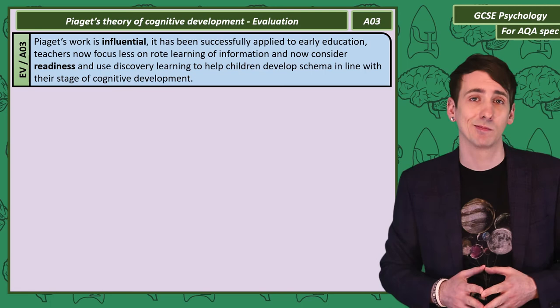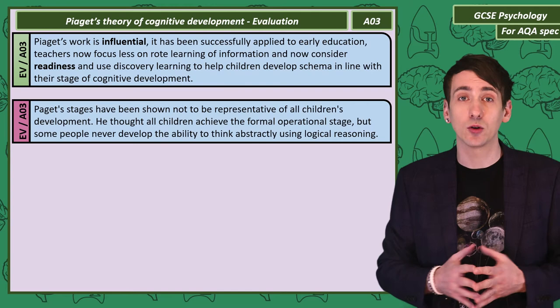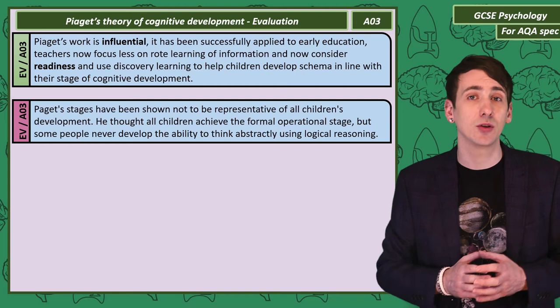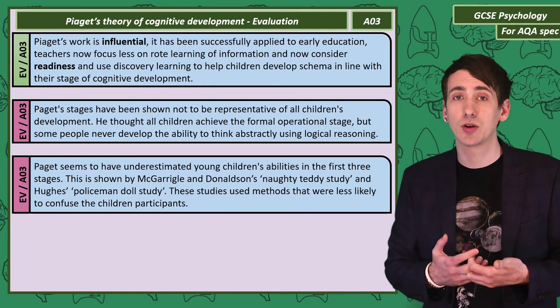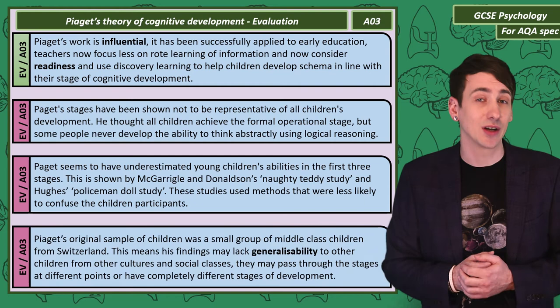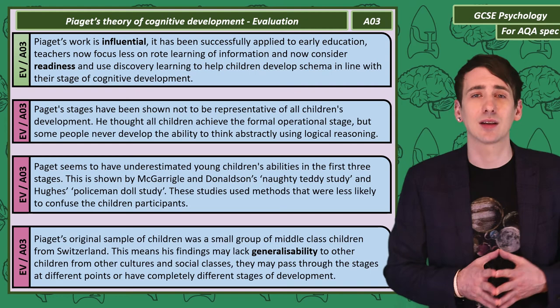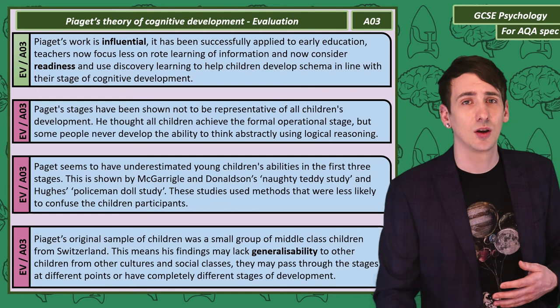Let's evaluate Piaget. His work has undeniably been influential — it has been applied to early education in many countries, with teachers focusing less on rote learning and more on discovery, and children are asked to complete tasks based on readiness and encouraged to develop their own schema. But there are criticisms. The stages suggested by Piaget don't match the development of all children. He thought all children would achieve the formal operational stage, but some people are never able to use logical reasoning to think abstractly. Also, Piaget seems to have underestimated children's abilities, and there are issues with his sample — they were all middle class children from Switzerland, so his findings likely lack generalizability to other cultures and social classes.